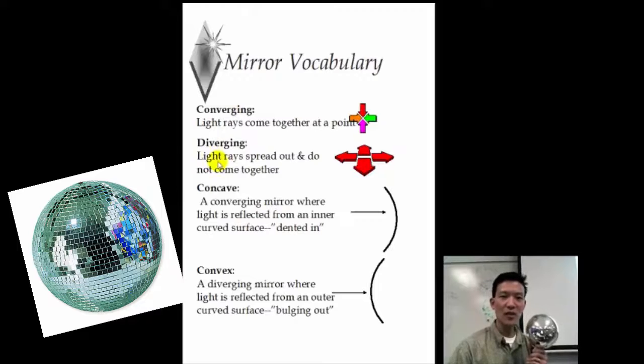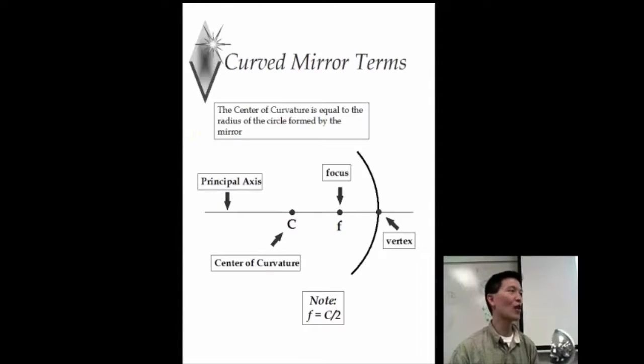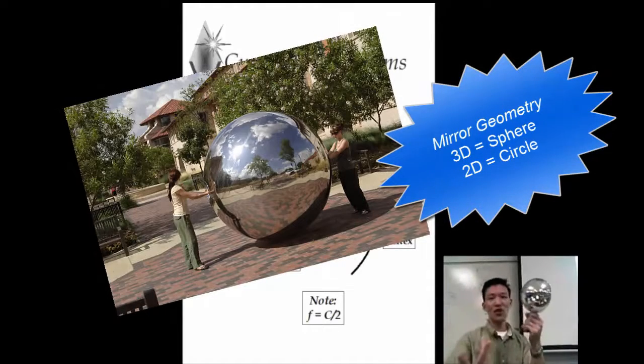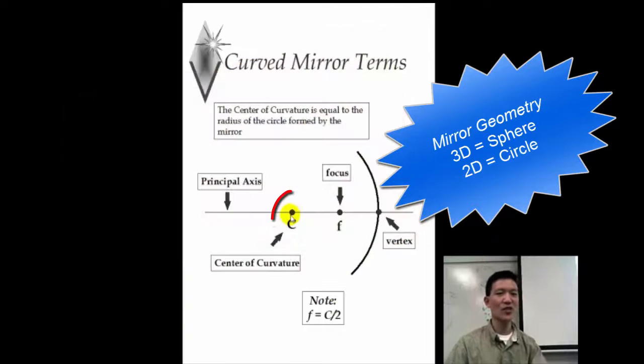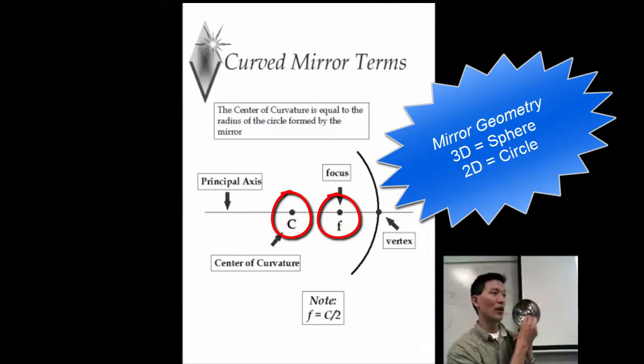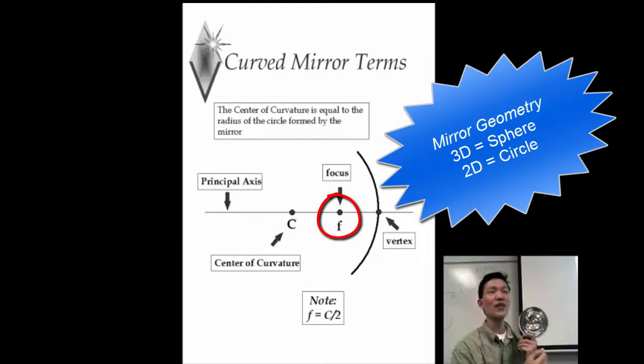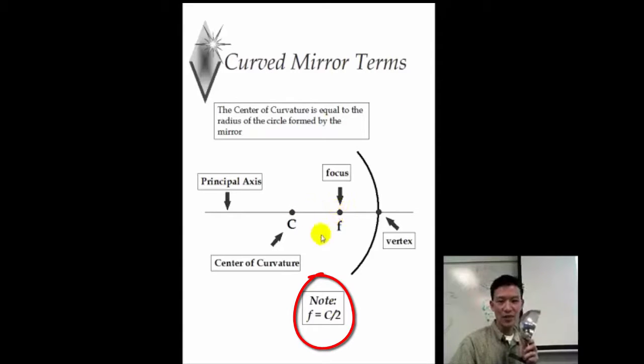In terms of how mirrors are shaped, they're all part of a sphere in 3D. A circle in 2D. If you look at the center of curvature, that's the center of that circle. There's a special point along there called the focal point. That's an important point. And it turns out, if you like geometry, you can prove this using geometric proofs, but we're not going to worry about it. But if you want to do it for extra credit, half the center of curvature is what we call the focal point.